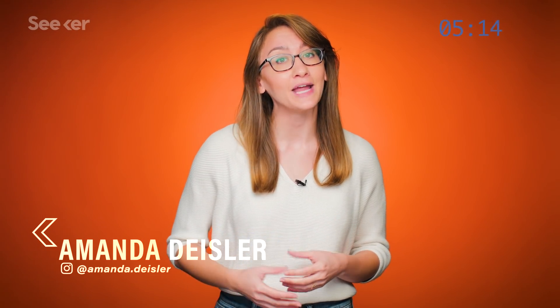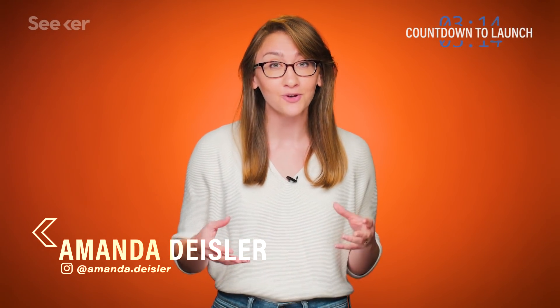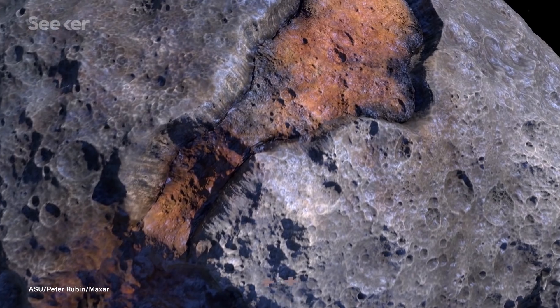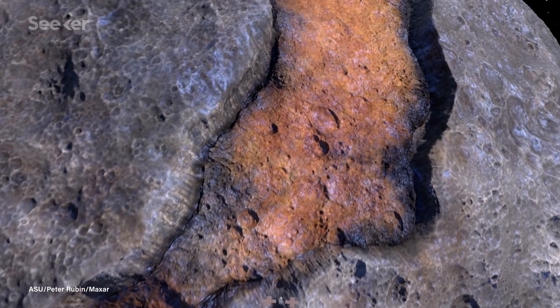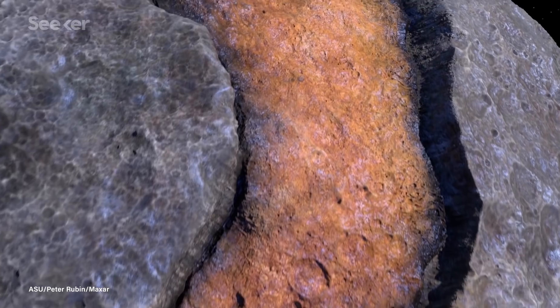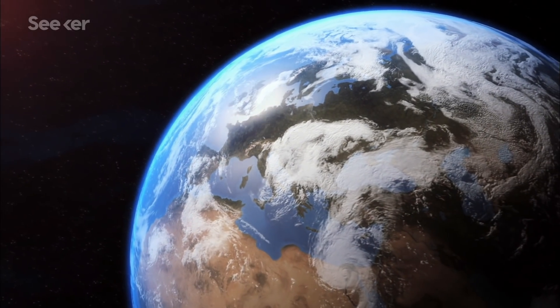And researchers from NASA and Arizona State University will be sending an orbiter to it for the very first time. We've never explored a terrain like this before, and it could be our only key to understanding what the inside of Earth's core could be like.